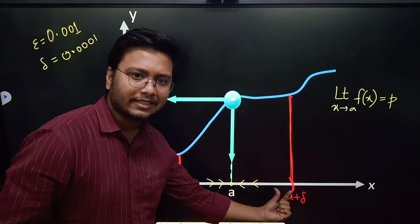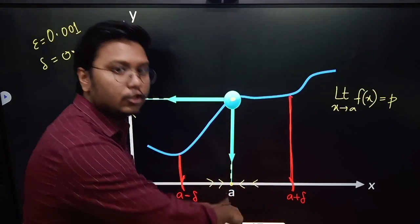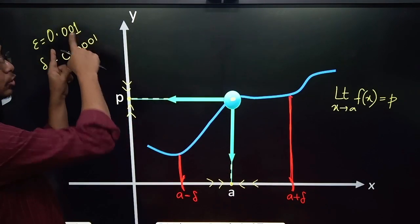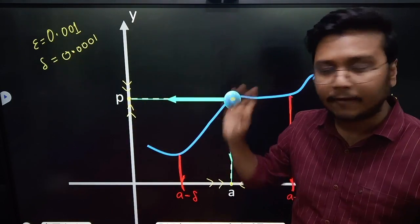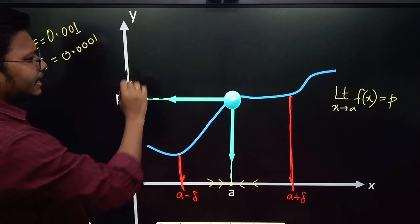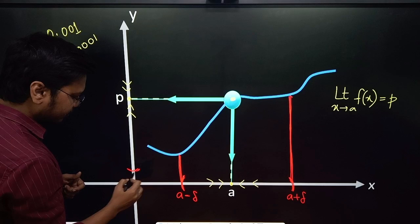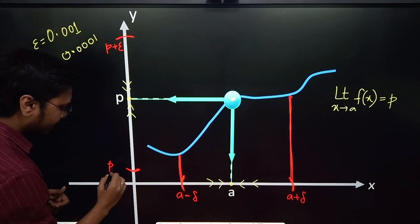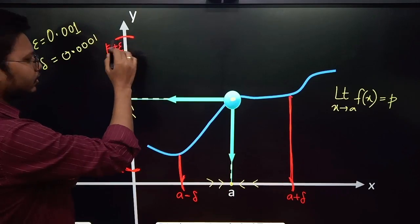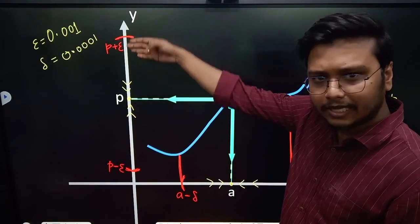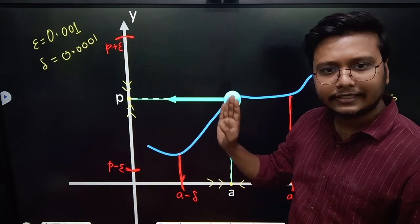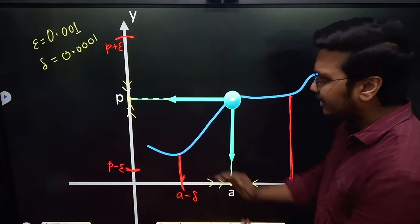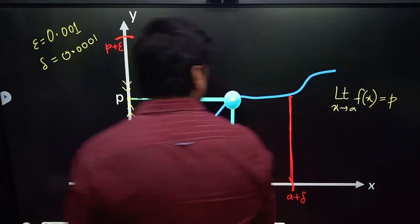I have limited you within this interval — you are free to move inside a minus delta to a plus delta, free to choose any value of x inside this region, not outside. This delta I have chosen based on your choice of epsilon. Now, p plus epsilon is somewhere above p and p minus epsilon is somewhere below p. Based on that epsilon I have the delta neighborhood around point a and an epsilon neighborhood around point p.